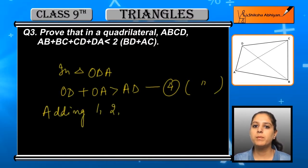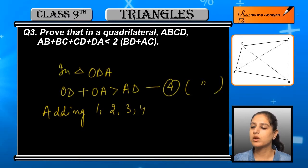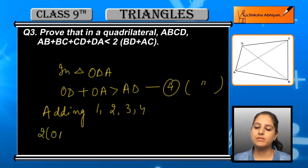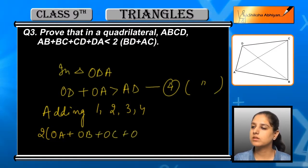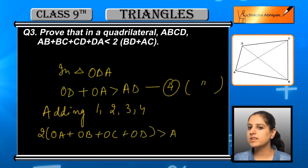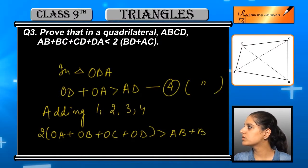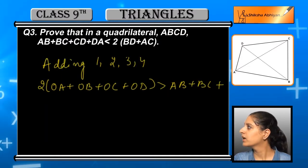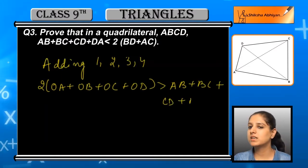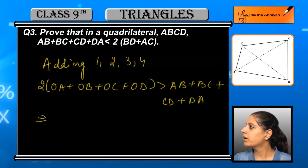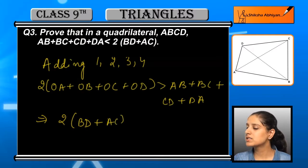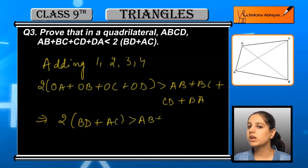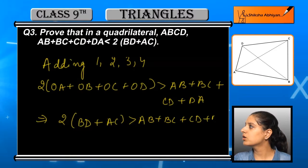Now we have 4 equations: 1, 2, 3, and 4. We will add all four equations — left-hand side and right-hand side. Adding gives us: twice OA plus OB plus OC plus OD is greater than AB plus BC plus CD plus DA. Now OB plus OD gives us BD, and OA plus OC gives us AC. So the left-hand side becomes twice of BD plus AC.